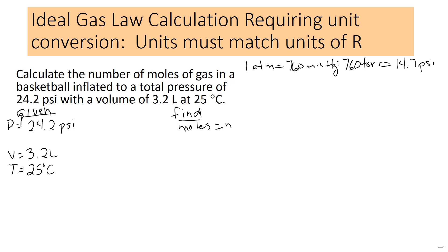So in this problem, we have psi, but we don't want that. We want the units of R. So remember R, 0.0821 liter atmospheres per mole kelvin. These are the units we need. So we don't need psi, we need atmosphere. So I'm going to do a conversion here. I'm going to put one atmosphere on the top and 14.7 psi on the bottom. And that converts pressure from psi to atmosphere. So 24.2 divided by 14.7, and that gives me 1.65 atmospheres.